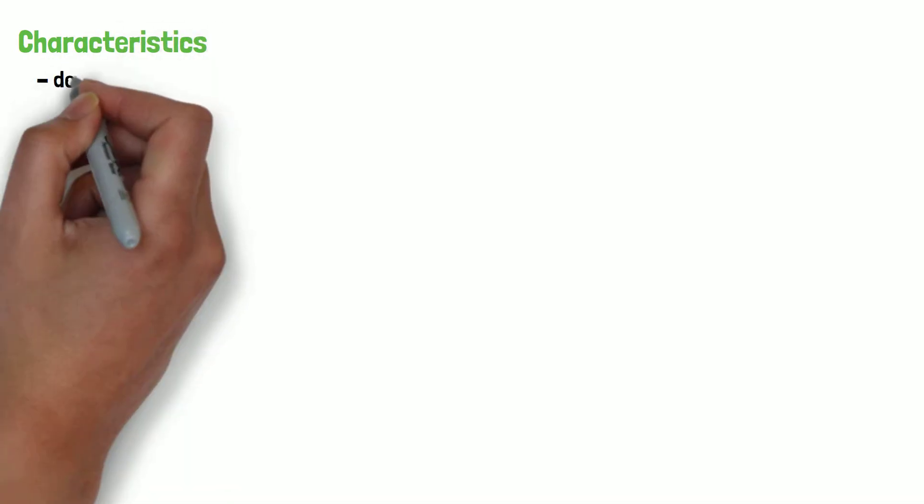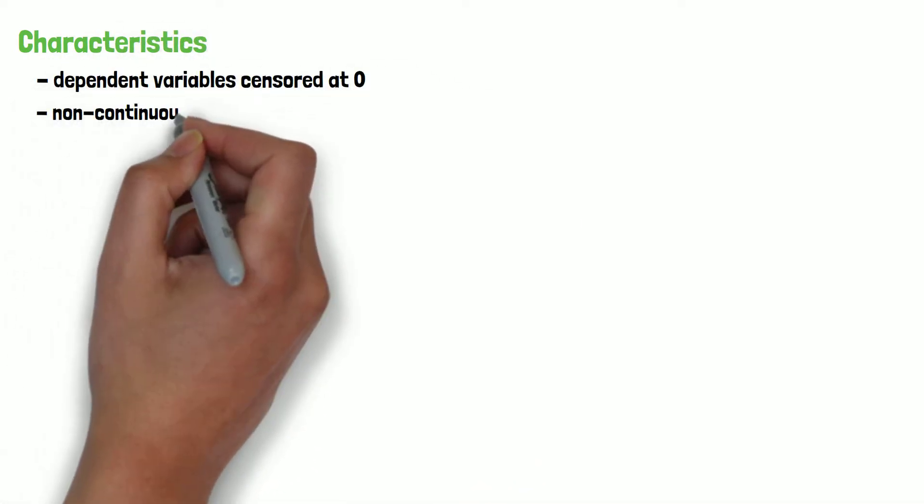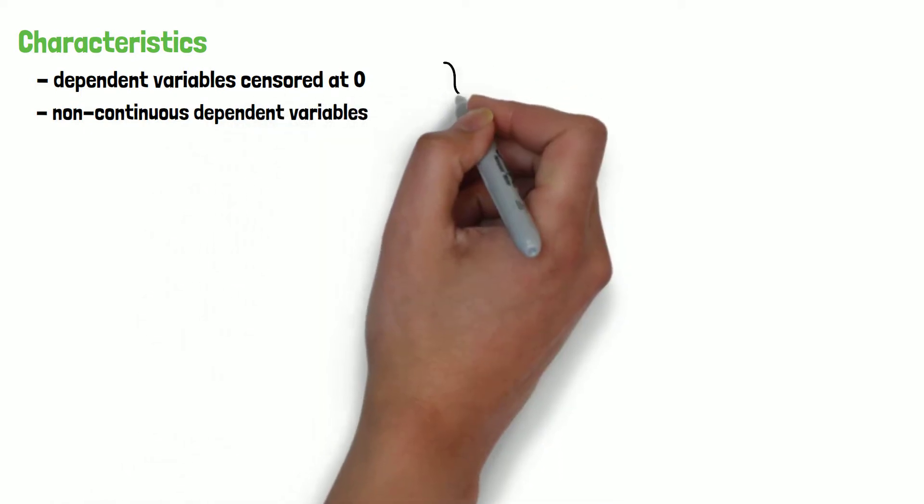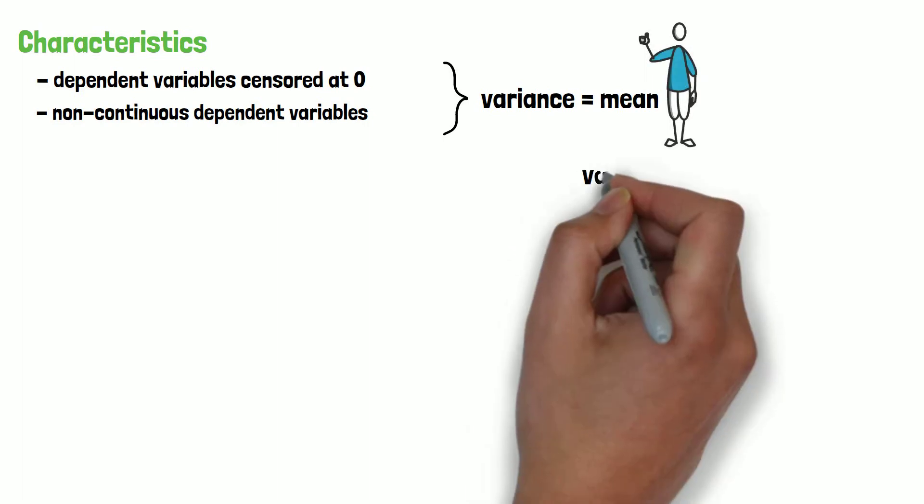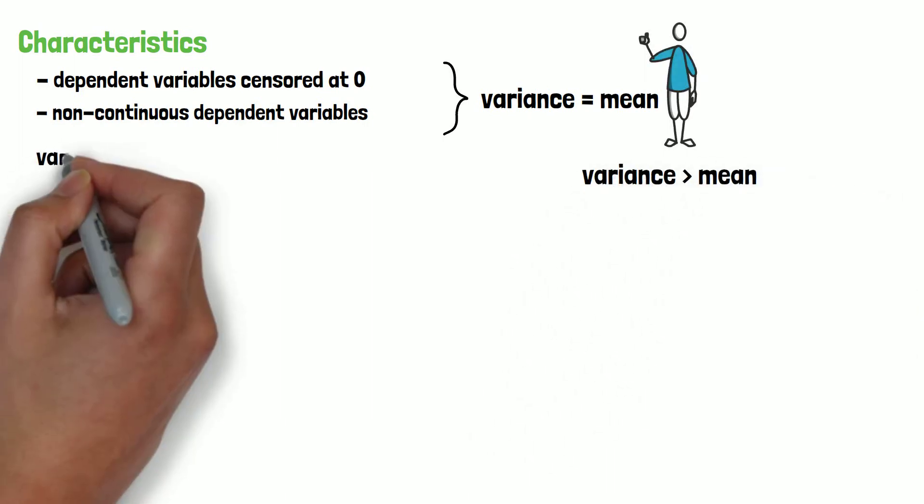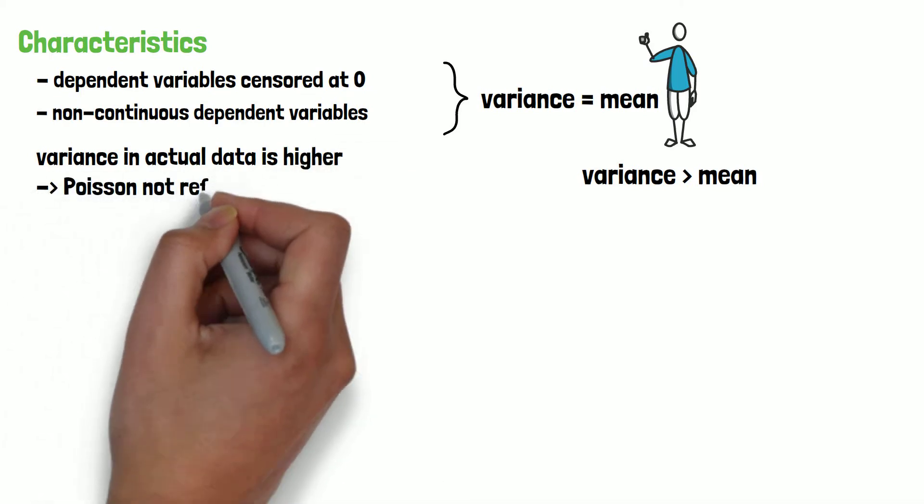Poisson regressions allow for dependent variables to be centered at zero and allow for non-continuous dependent variables, but the variance must be equal to the mean. If the variance is higher than the mean, the Poisson distribution has a lower variance than the actual data and is therefore not reflecting it accurately.